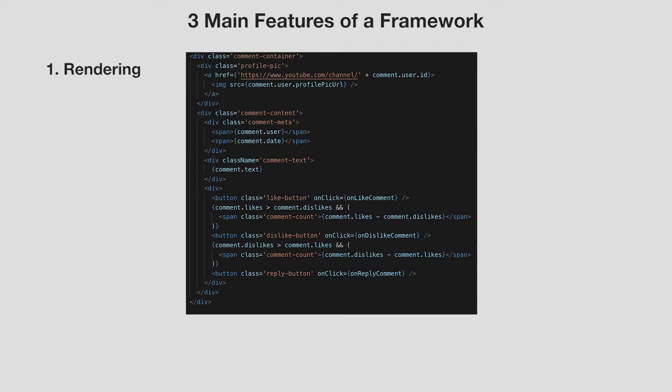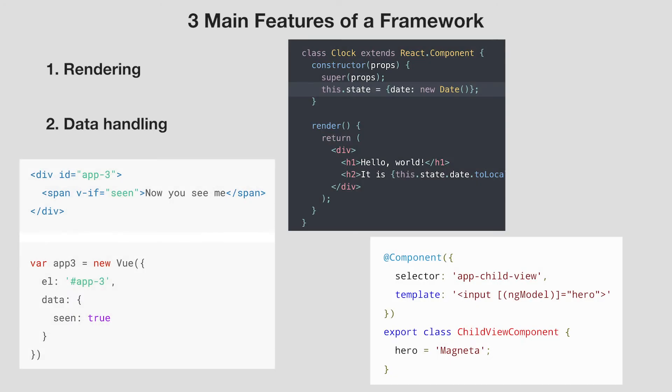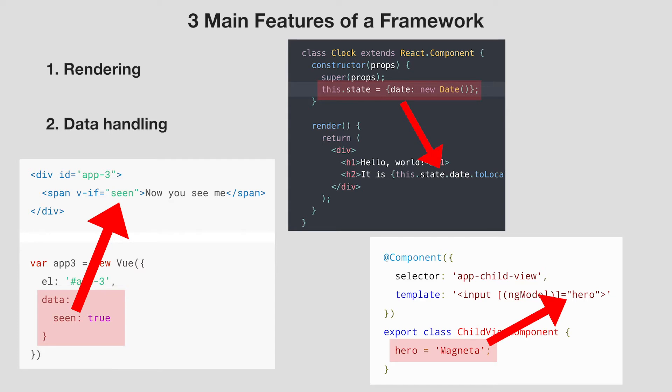Now that we have a general sense of what a framework looks like, let's break down the three main parts. The first part is rendering, which we just talked about — we write our code as a template, also known as templating, where we write an HTML template and the values are filled by our data. Then the framework converts it into JavaScript, which renders our webpage. The second feature is data handling: all frameworks have a way for you to put your data in, and then it takes that data and renders it according to your template, filling in the values.